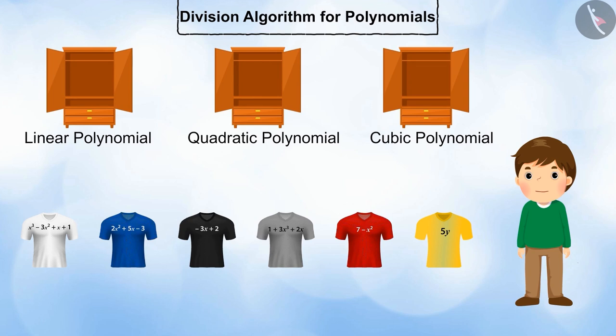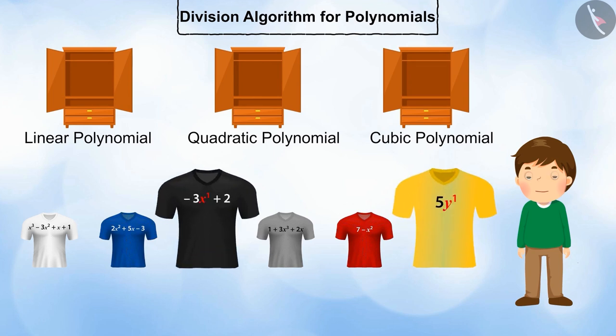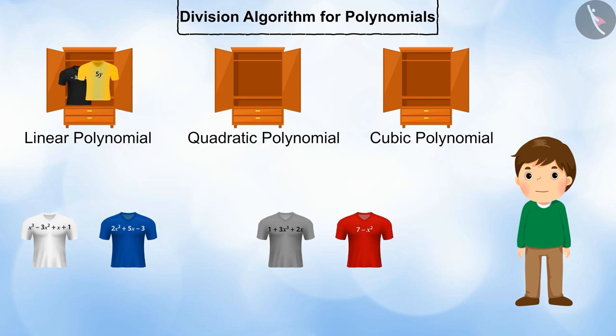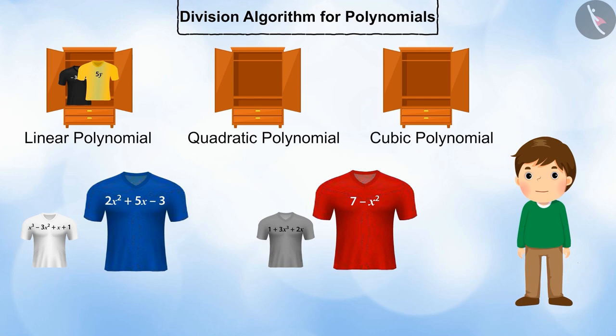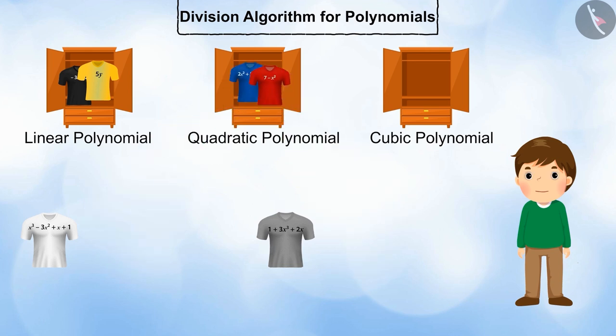You can see that the highest power of these polynomials is 1, so these t-shirts will go into the linear polynomial wardrobe. The red and blue t-shirts will go into the quadratic polynomial wardrobe, as the highest power of these polynomials is 2.